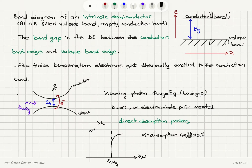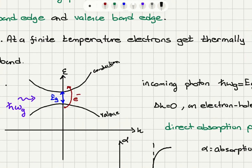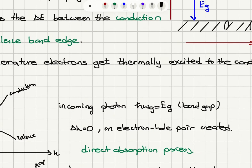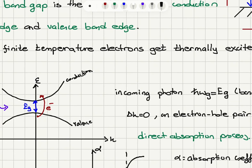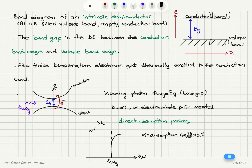If we have a photon incident on a semiconductor carrying an energy ℏω_g such that this energy matches that of the band gap, there will be a resonant absorption of this photon. This results in an electron getting excited from the valence band edge to the conduction band edge, creating an electron-hole pair — an empty state in the valence band and a filled state in the conduction band. If this process involves the motion of the electron from one band edge to the other with no change in the k-vector, it is called a direct absorption process.